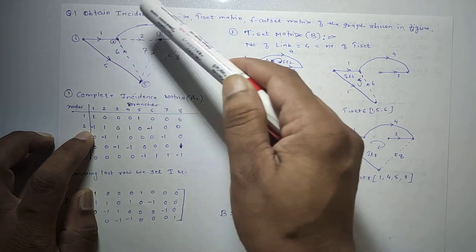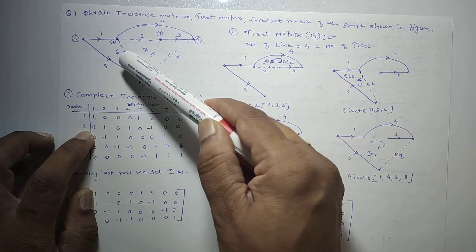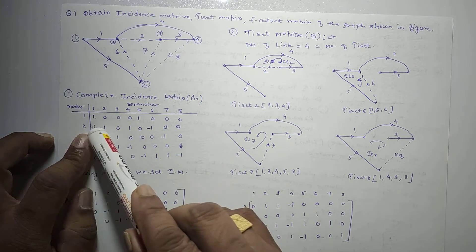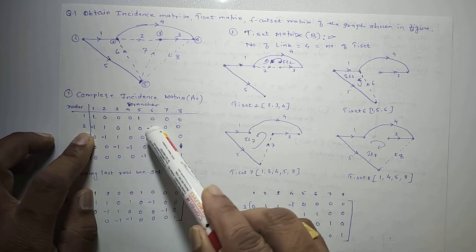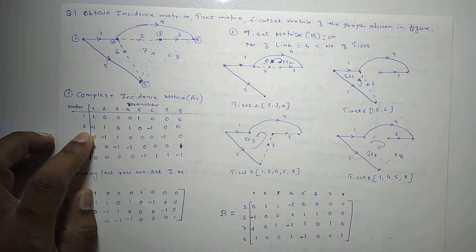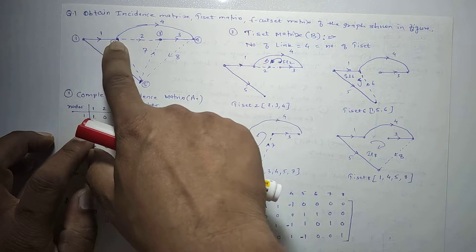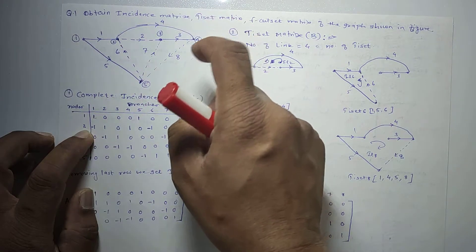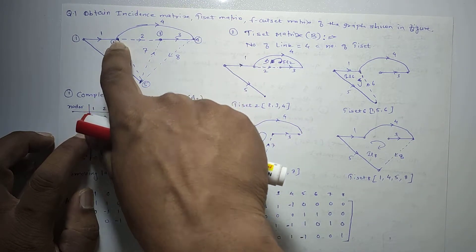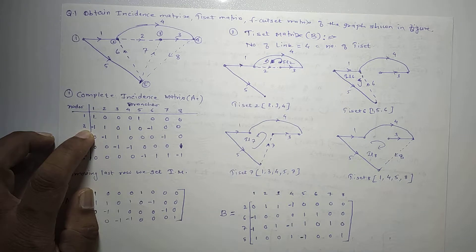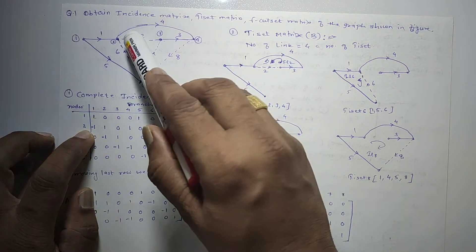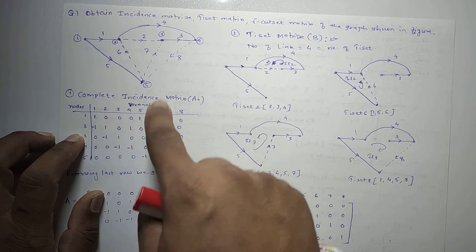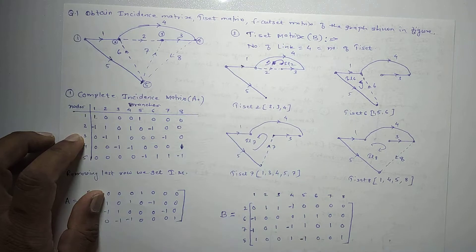For node 2, branches 1, 2, 4, and 6 are connected. Branch 1 is entering towards the node, so it is negative. Branch 6 is also entering, so it is negative. Branches 2 and 4 are leaving, so they are positive. So for node 2: branches 1 and 6 are negative, branches 2 and 4 are positive.